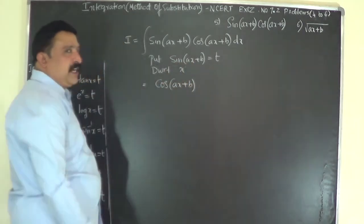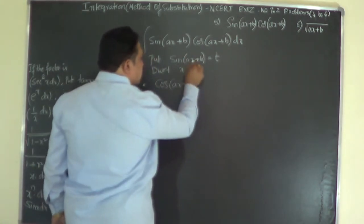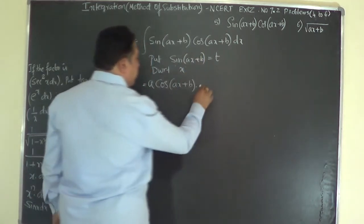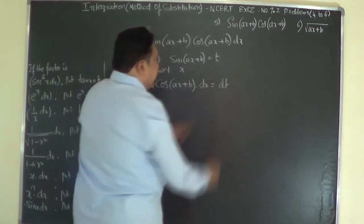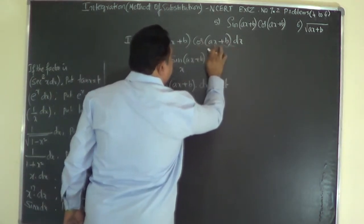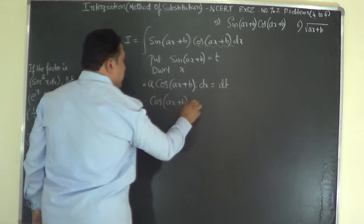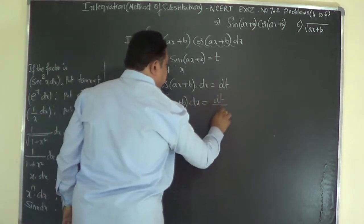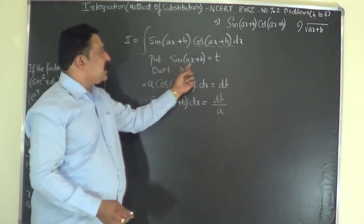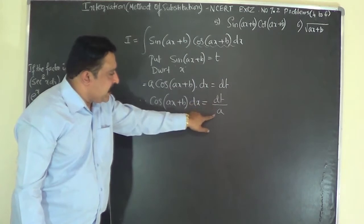Differentiating sin(ax + b): the differential coefficient is cos(ax + b) times the differential coefficient of ax + b, which is A. So A · cos(ax + b) dx equals dt. We want cos(ax + b) dx isolated, so cos(ax + b) dx equals dt over A. Therefore in this problem, sin(ax + b) is the substitution factor and cos(ax + b) dx equals dt/A is the replacement factor.